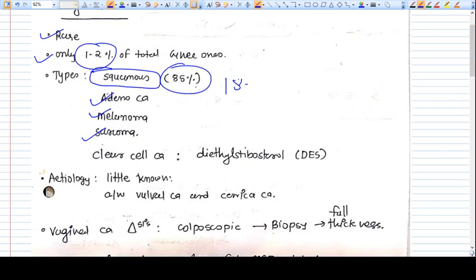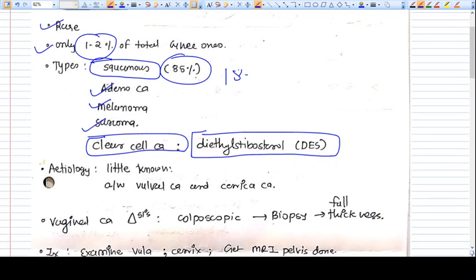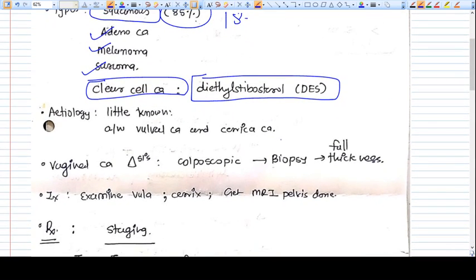The clear cell carcinoma type is most well-known because it was caused by use of diethylstilbestrol (DES), a drug used in pregnancy previously. It was a synthetic estrogen that helped pregnant women relieve many symptoms.